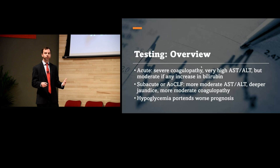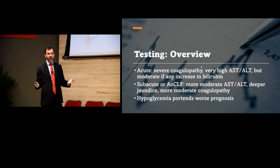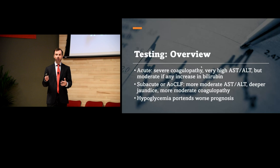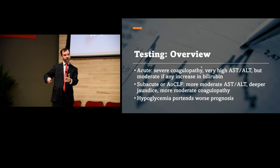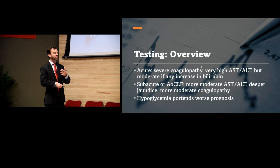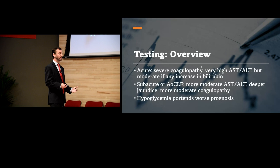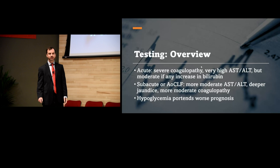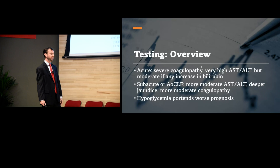Labs can help you determine acuity. In acute presentation, expect a raging transaminitis and abnormal coagulopathy, but only a modest bilirubin elevation with perhaps little jaundice. In subacute or acute-on-chronic presentation, you'll see the opposite — transaminases may not be very high, coags may not be terrible, but you'll see more raging bilirubinemia and jaundice. In both cases, hypoglycemia is always a bad sign.